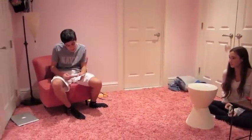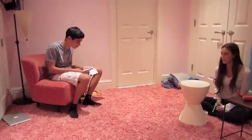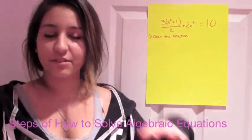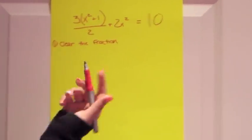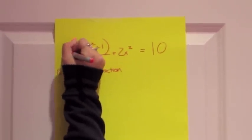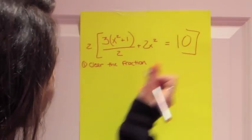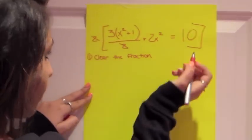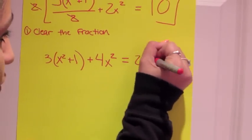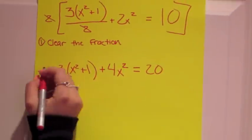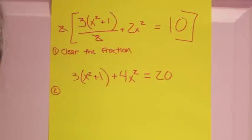3 parenthesis x squared plus 1 parenthesis divided by 2 plus 2x squared equals 10. What is an algebraic equation? Today I'm going to teach you the steps of how to solve algebraic equations. So the first step is you clear the fraction. You divide the whole thing by 2 so that this would cross out. So you multiply 2 times 2 which is 4x, and then 2 times 10 which is 20. The second step, you distribute.